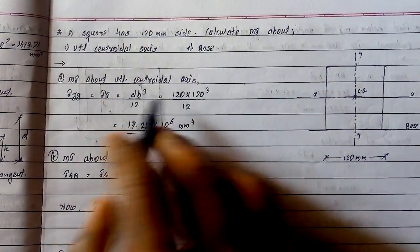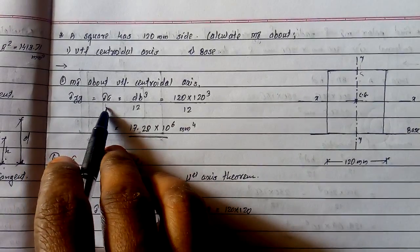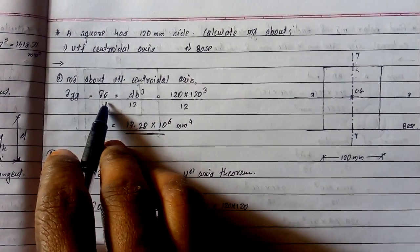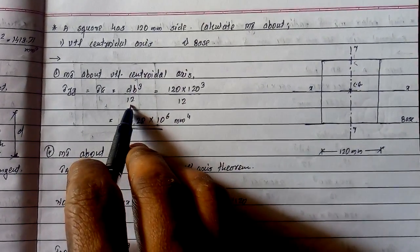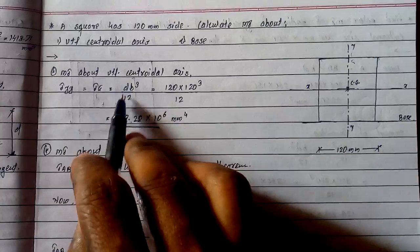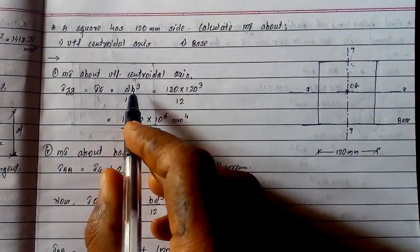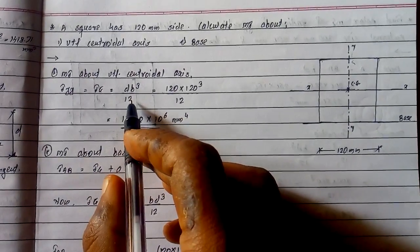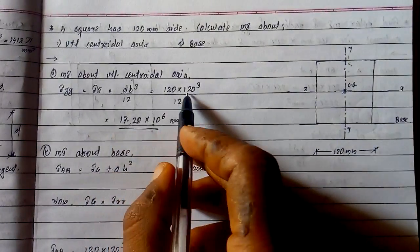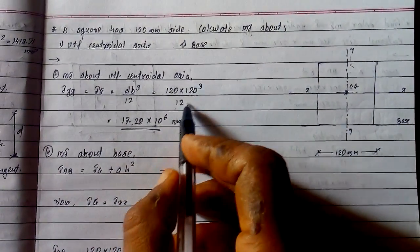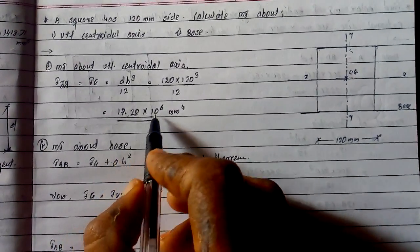First of all, moment of inertia about vertical centroidal axis, which is I_yy, which is nothing but I_g. The formula is db³ upon 12. Substituting d value 120, b value 120, upon 12. For a rectangle, if d and b are same, both values are 120. The value we get is I_yy = 17.28 × 10⁶ mm⁴.